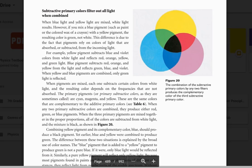For example, yellow pigments subtract blue and violet colors from white light and reflect red, orange, yellow, and green light. Blue pigment subtracts red, orange, and yellow from the light and reflects green, blue, and violet. When yellow and blue pigments are combined, only green light is reflected.